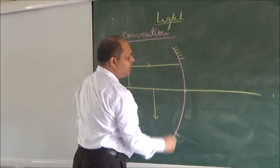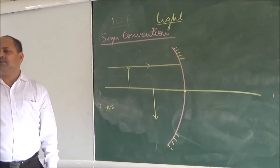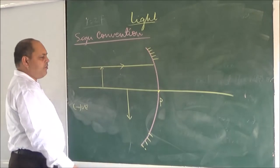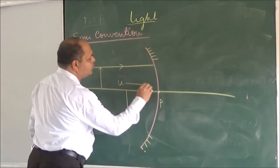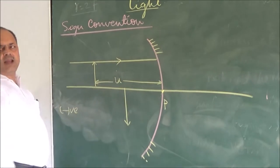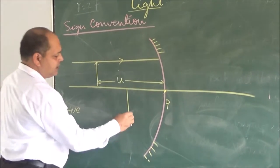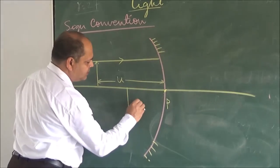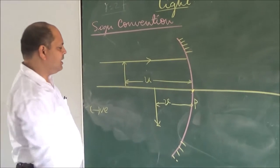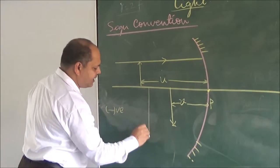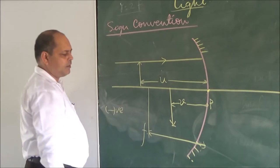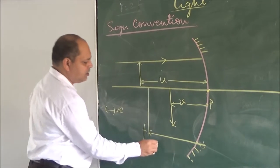Every measurement is done from the pole of the mirror. If we consider the object position U, then U in this case will be negative. This is the image position, so it is V. V is also negative in this case. Suppose F is here — F is also negative.